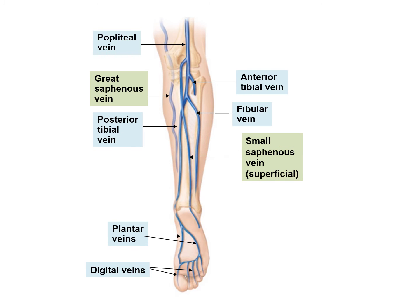We also have the internal iliac vein and the common iliac vein. In green, the great saphenous vein is a superficial vein on one side, and the small saphenous vein is a superficial vein on the other side. On the posterior view, the anterior tibial vein becomes the popliteal vein, then the femoral vein. From the hand, we start with digital veins, then palmar veins, then the posterior tibial and fibular veins, becoming popliteal and then femoral.